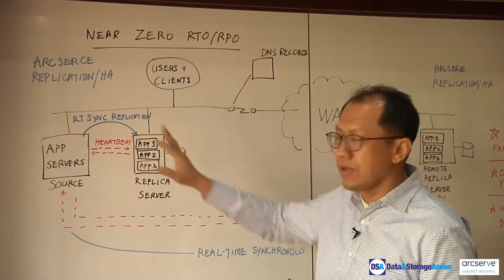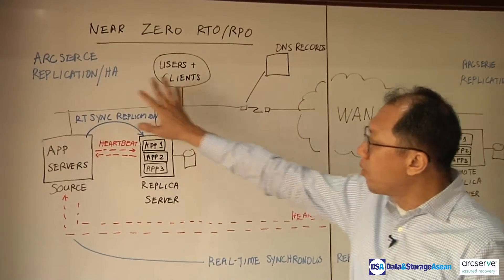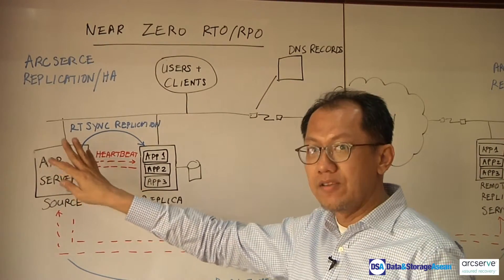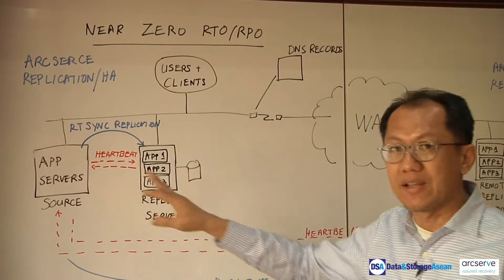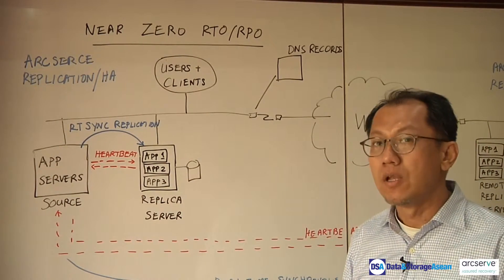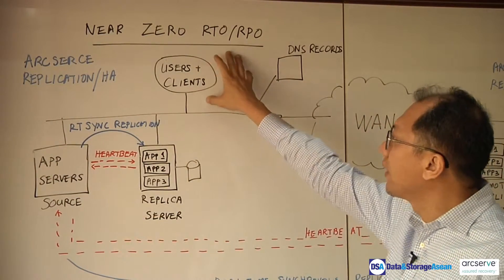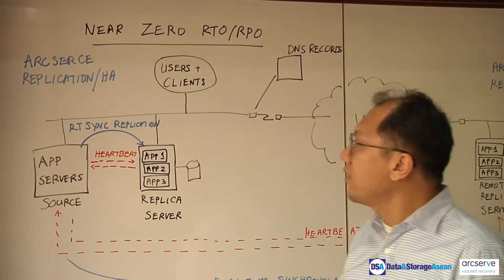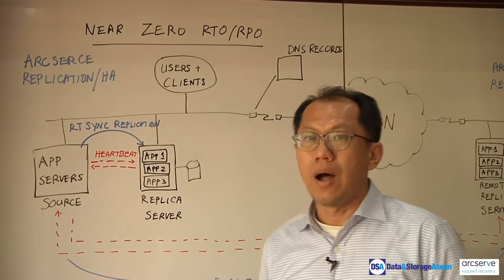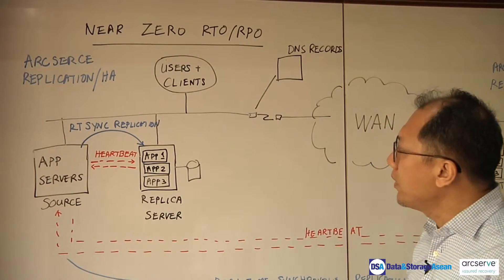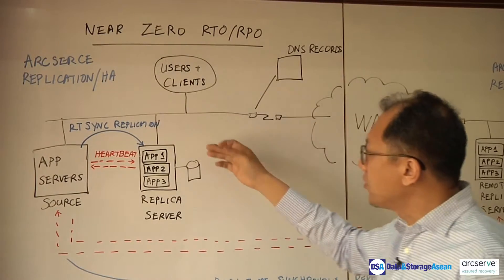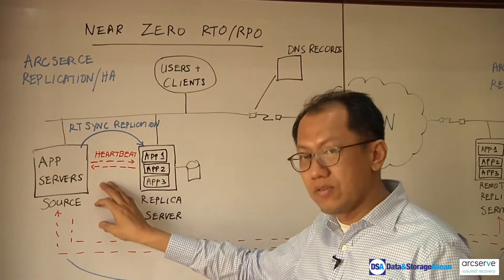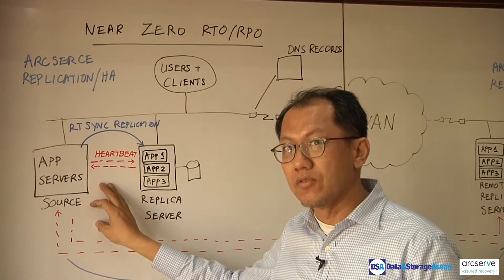In this scenario, we have a local data center with a set of application servers serving applications like databases, email, and virtual machines to clients and users on the local area network. To set up a near-zero RTO and RPO environment, ArcServe Replication HA needs to set up a replica server, while all the other application servers are considered the source to be backed up.